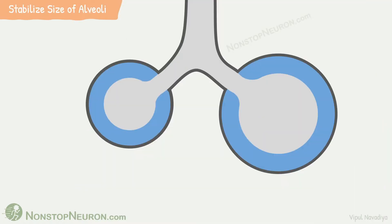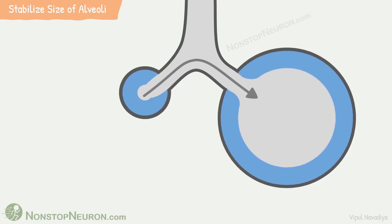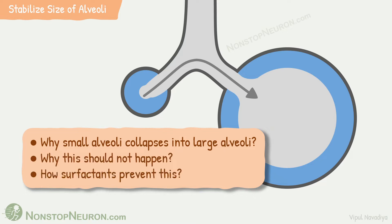Now, the third function: stabilizing the size of alveoli. This one is going to be lengthy. In the absence of surfactants, small alveoli collapse into large alveoli. We will study how surfactants stabilize size under three questions: Why do small alveoli collapse into large alveoli? Why should this not happen? And finally, how do surfactants prevent this?